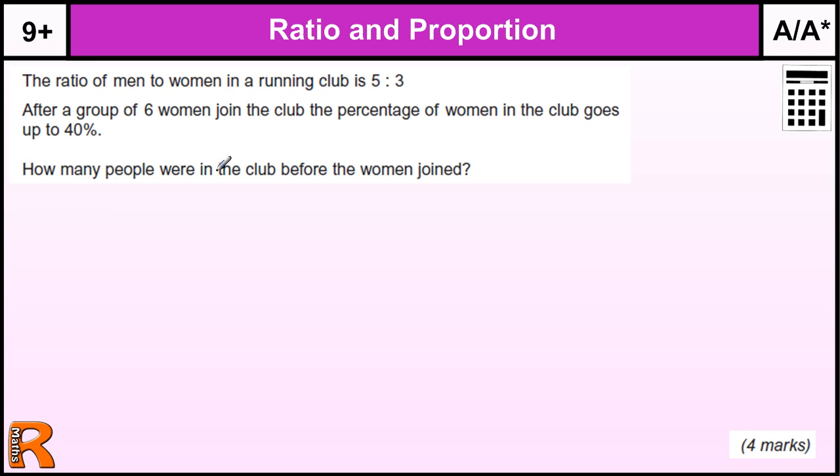But to start with, once I actually figured out what was going on here, I tried to write an equation. So I actually looked at the women because that's what it's talking about. So 3/8ths, if we actually call the number of people that started X, we're trying to find X. So at the start we've got 3/8ths of X. That's how many women are in the club to start with.